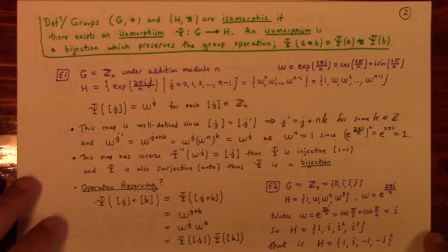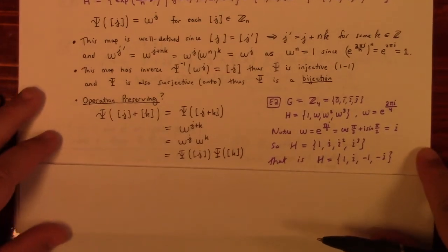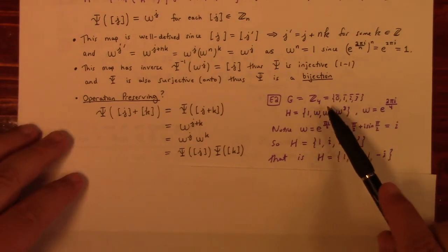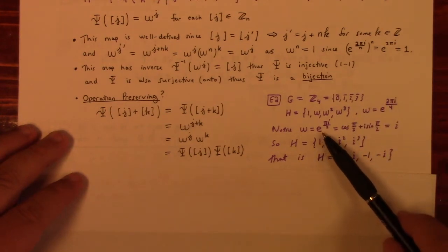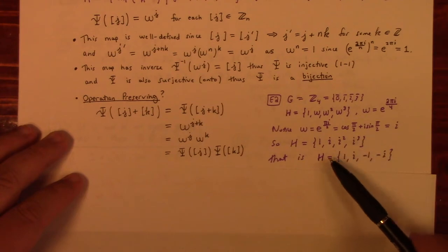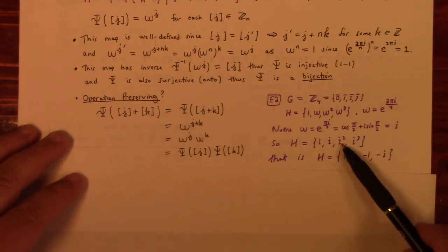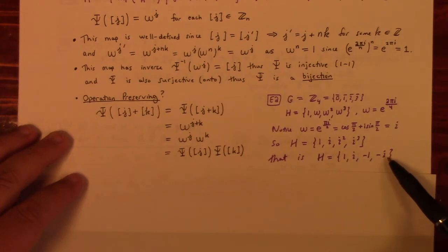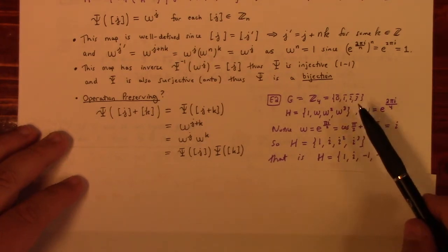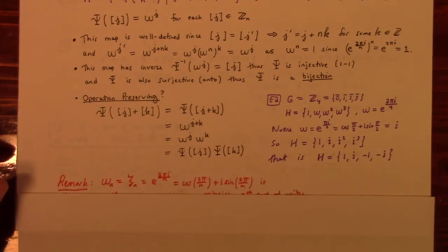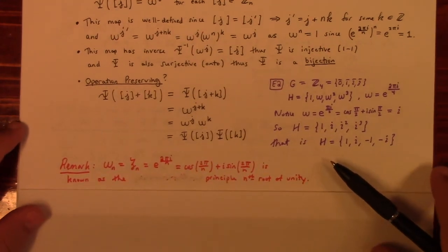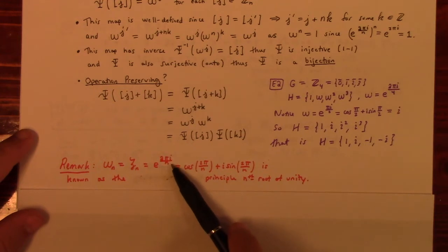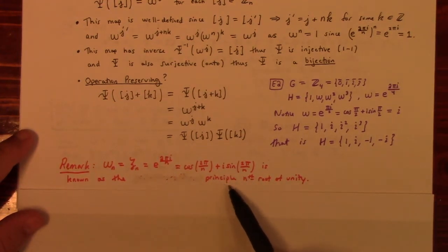To be explicit, if we look at Z mod 4 and the fourth roots of unity: since e^(πi/2) = i, the fourth roots of unity are 1, i, i², i³ — that is, 1, i, −1, −i. This set of complex numbers under multiplication is isomorphic to the set of modular integers under arithmetic mod 4. The notation ω_n or ζ_n = e^(2πi/n) is used for the principal nth root of unity.